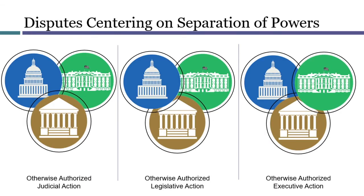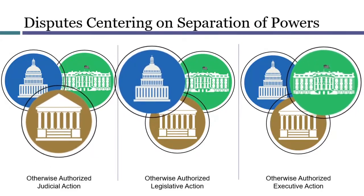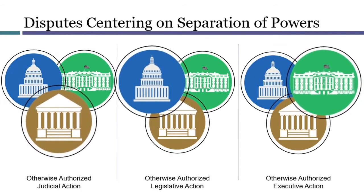In a much smaller set of cases, separation of powers is the central question, rather than being a background question about intensity of judicial review. In the situation symbolized on this slide, each branch of the government could be performing some action that would ordinarily be considered constitutional — like Congress using one of its enumerated powers to enact a statute, or a court issuing a subpoena to a witness — but on the specific facts, the particular use of those powers might endanger the balance among the branches.